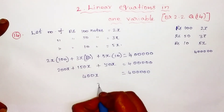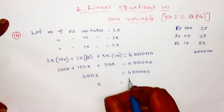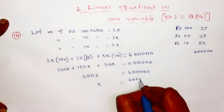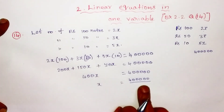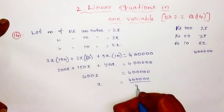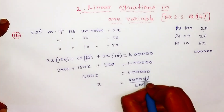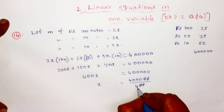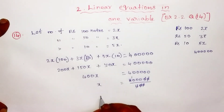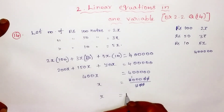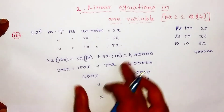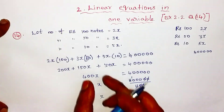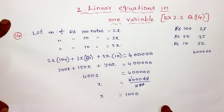Solving for x: x equals 4 lakhs divided by 400, which gives x equals 1000.